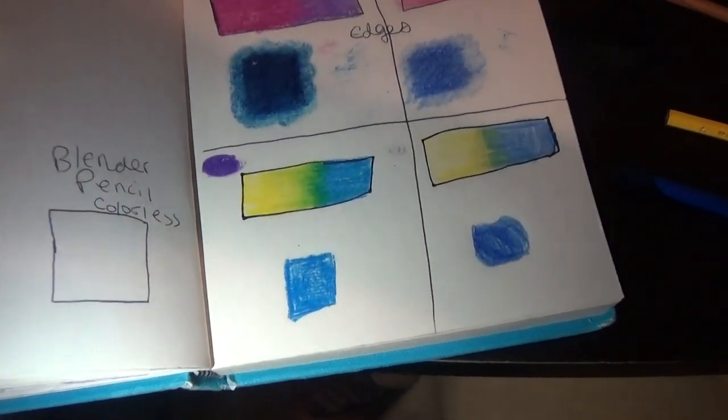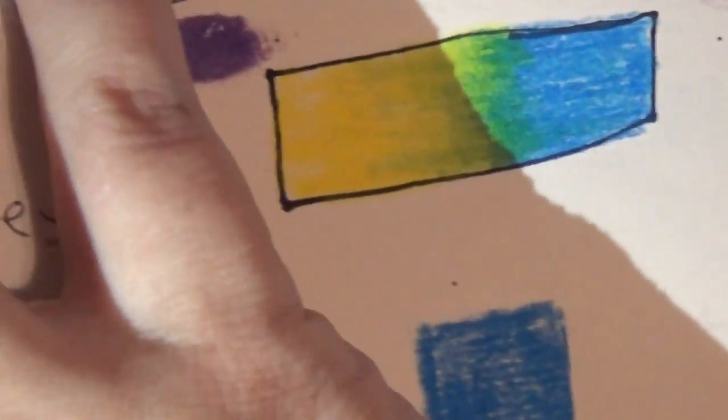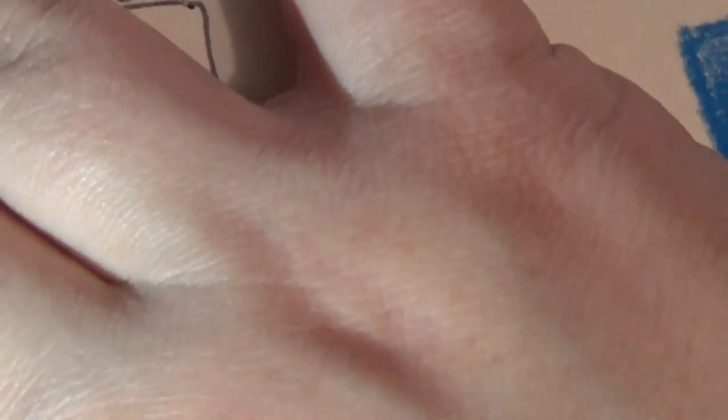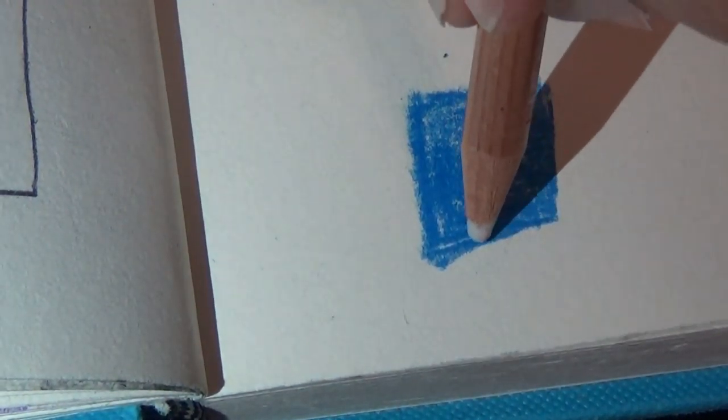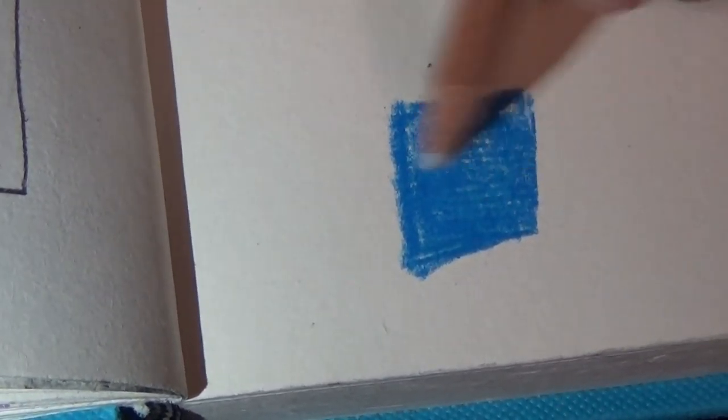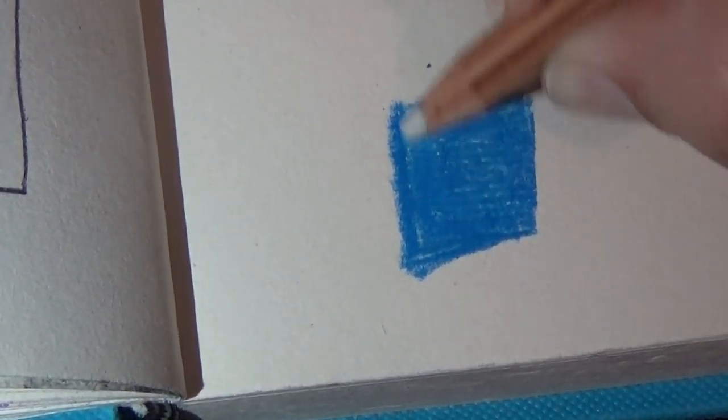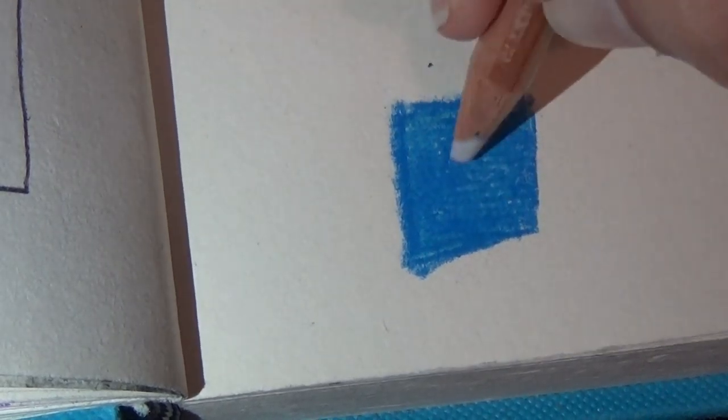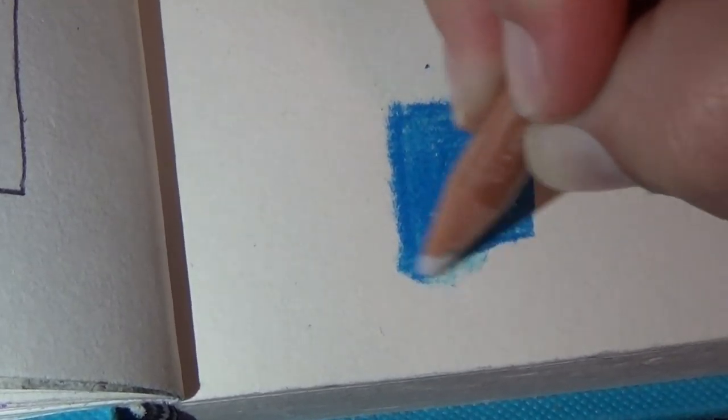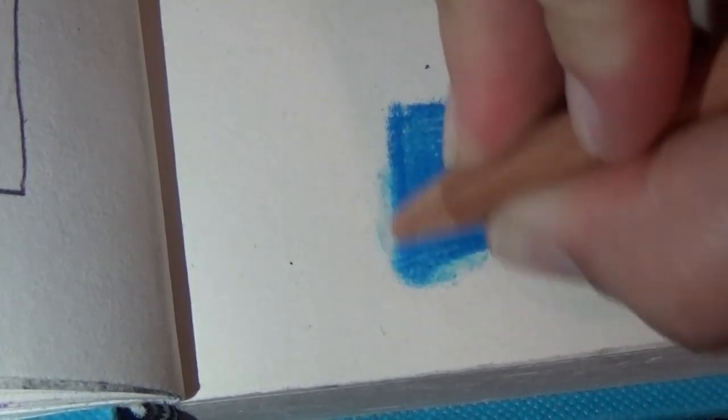So with this blue one, the Prisma, you can tell that it's a little uneven colored. This pencil helps even that out a little bit. I have to blend out the rough edges.